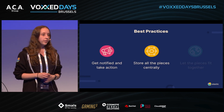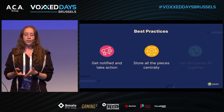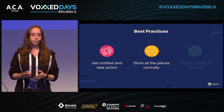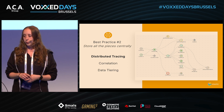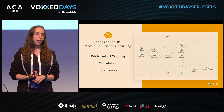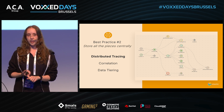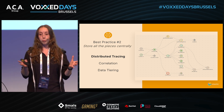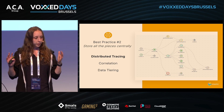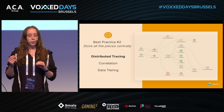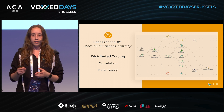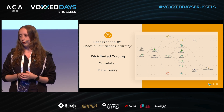The second best practice is storing all the data in one single place, so you have all the context you need when something happens. To do this, you can leverage distributed tracing, which you can do using the Elastic APM agent or OpenTelemetry agents. We support both protocols natively. By having distributed tracing, you can see which applications or services are having issues and find the team that is responsible for them.